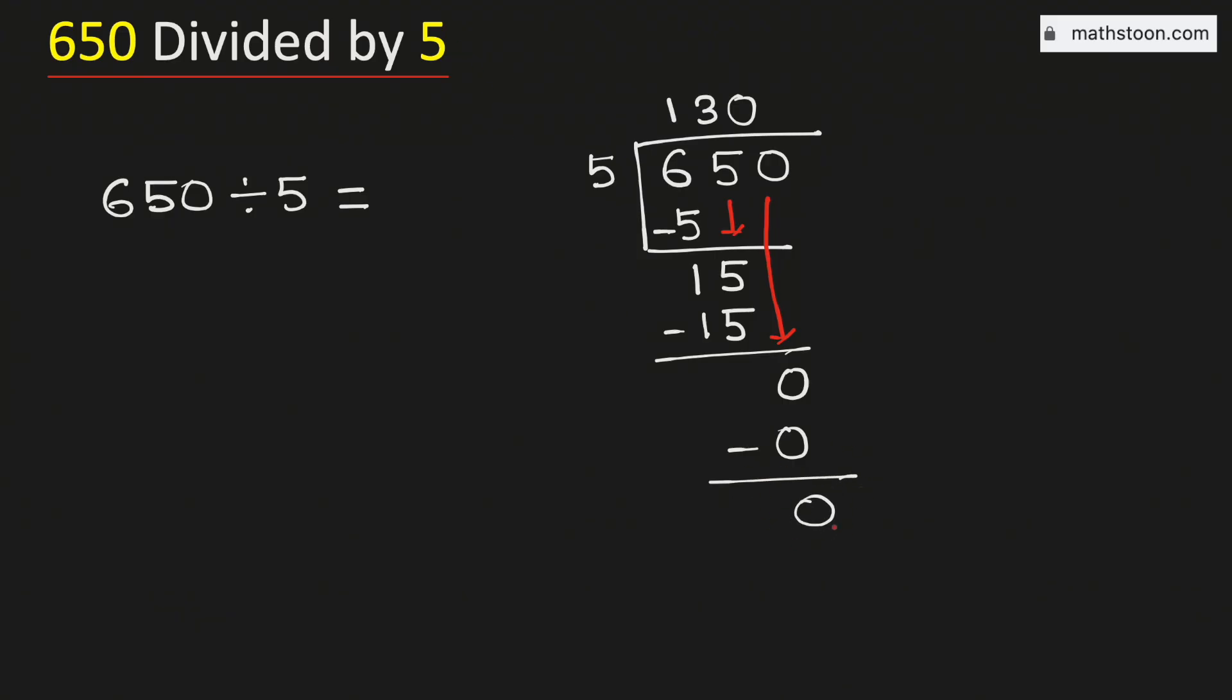As we have got the remainder 0 and there is no number to bring down here, we will stop. Therefore, 650 divided by 5 is equal to 130. And this is our final answer.